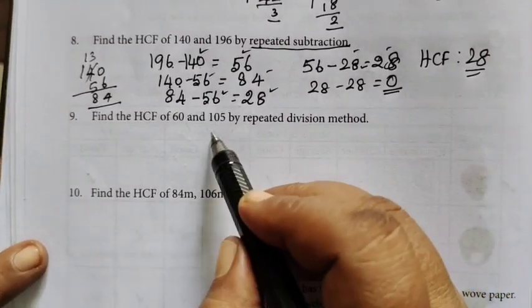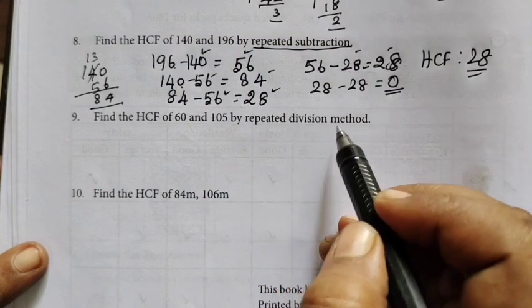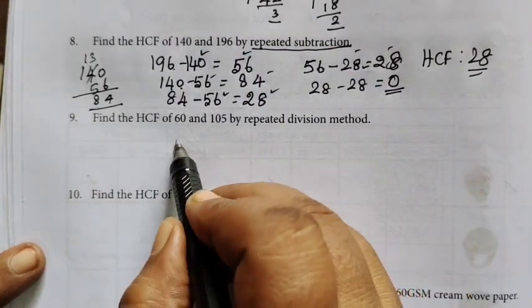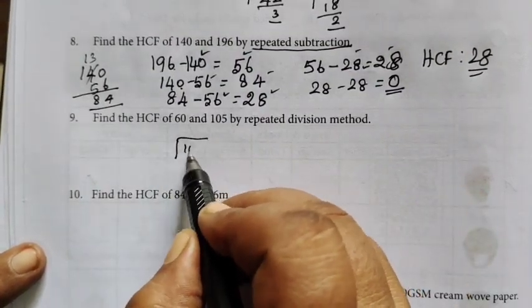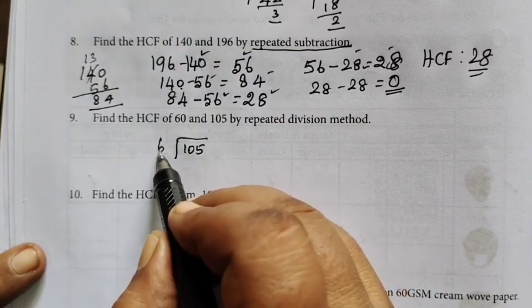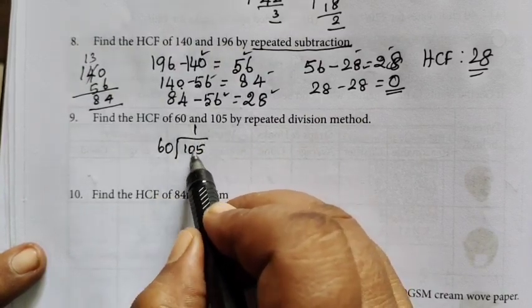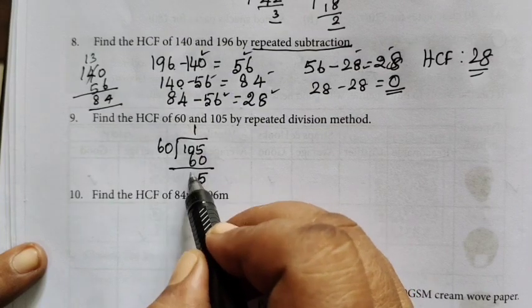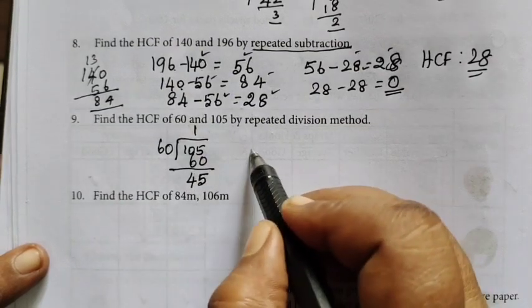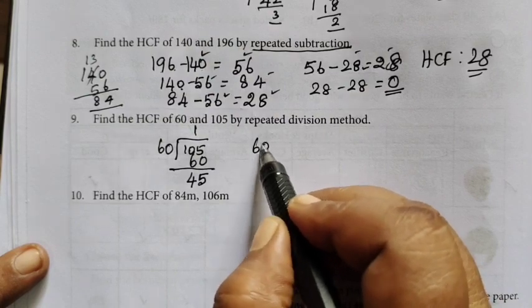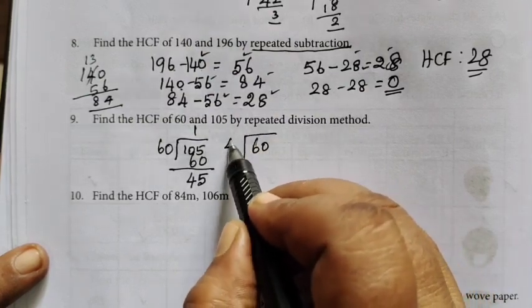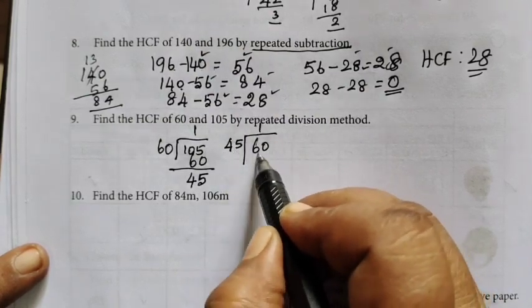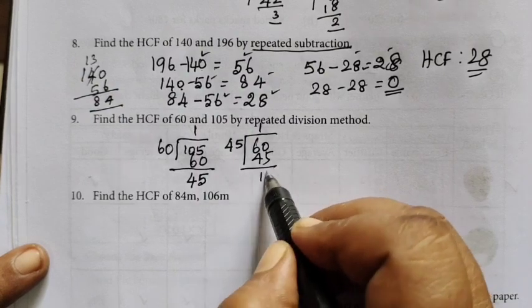Find the HCF of 60 and 105 by repeated division method. Here is the largest number, so 1 minus 6 is 4, this is the largest number, so 45 minus 45 is 15.